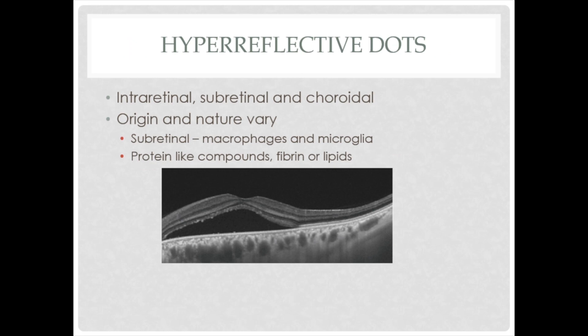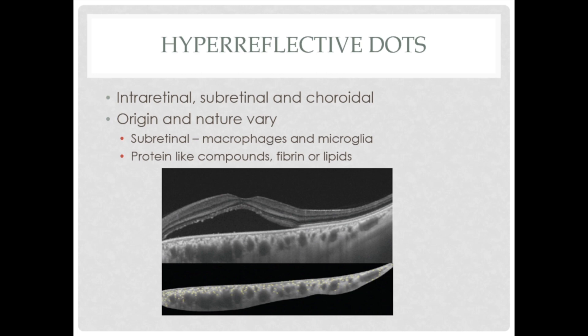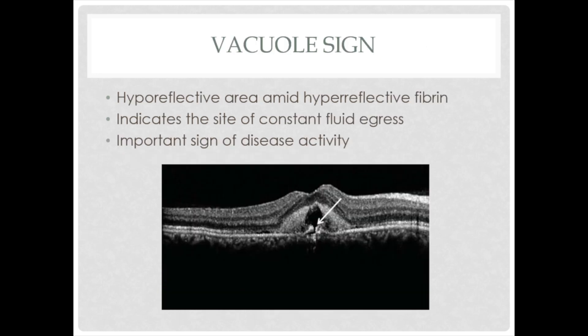Hyperreflective dots are deposits — hyperreflective spots which can be seen in intraretinal, subretinal, or choroidal areas. Their origin may vary. Subretinal hyperreflective dots are said to be due to macrophages and microglia engulfing elongated photoreceptors, or can be protein-like compounds, fibrins, or lipids. Subretinal HRDs are seen in long-standing cases and suggest a low final visual acuity. Another sign seen is the vacuole sign — a hyporeflective area amid hyperreflective fibrin, indicating the site of constant fluid egress and an important sign of disease activity.